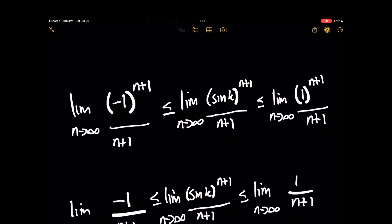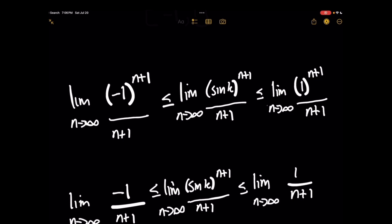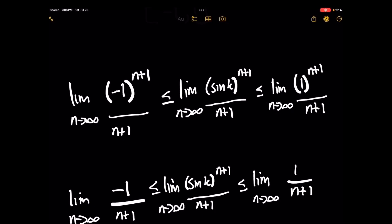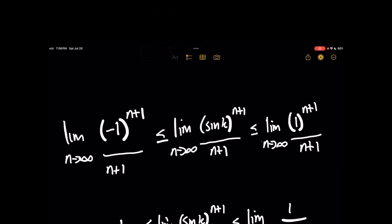One observation: negative 1 raised to the n plus 1 could result in positive 1 or negative 1 depending on what n is — and that's totally correct. But we don't need to worry about that here, because if it's negative 1 the power just stays as negative 1, and if it's positive 1, we're already covering that in the upper bound.